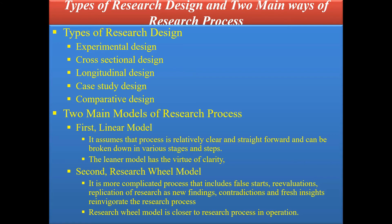There are two dominant research processes. A researcher can use more than one type of design to complete a research project. The first research process is the linear model, and the second is the research wheel model.